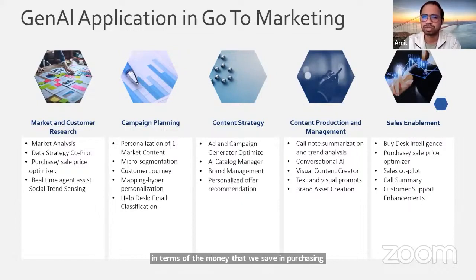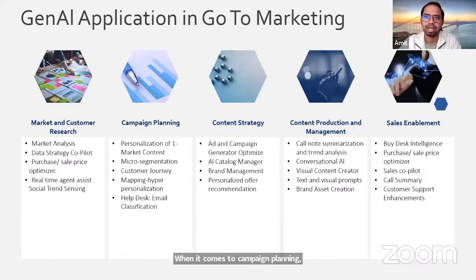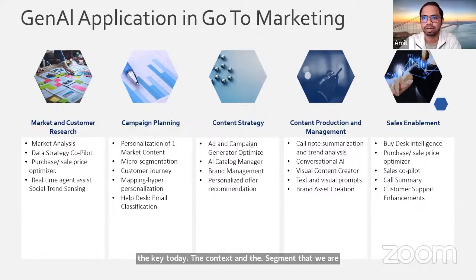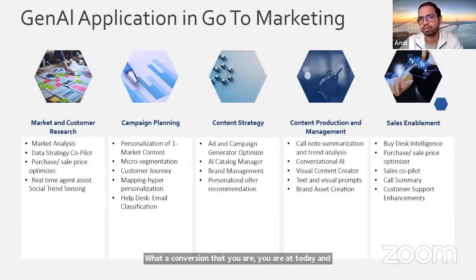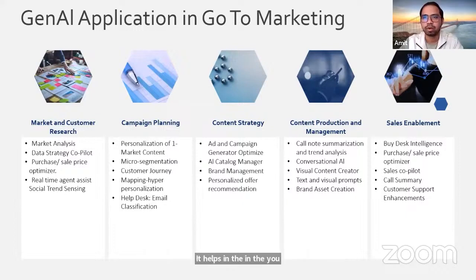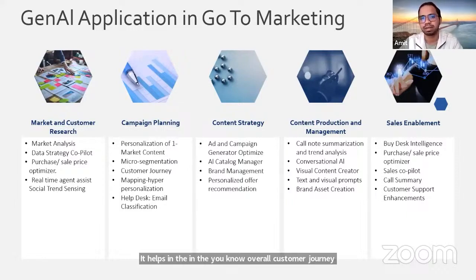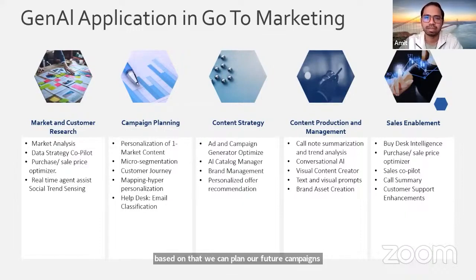When it comes to campaign planning, personalization is the key today. The context and the segment we are targeting really help in terms of conversion rate — what conversion you are at today and what is your potential target. It also helps with overall customer journey mapping: identifying where there is churn, where customers are dropping off, so we can plan future campaigns based on that.